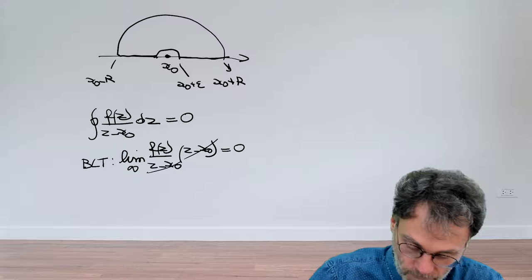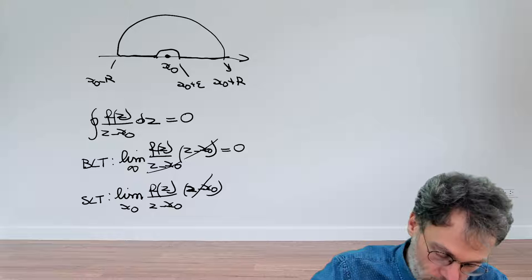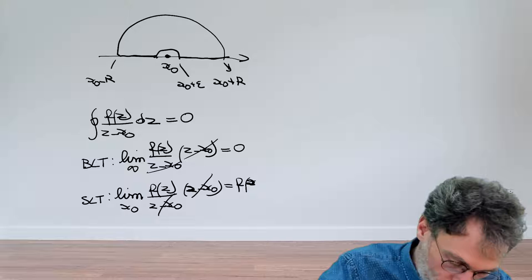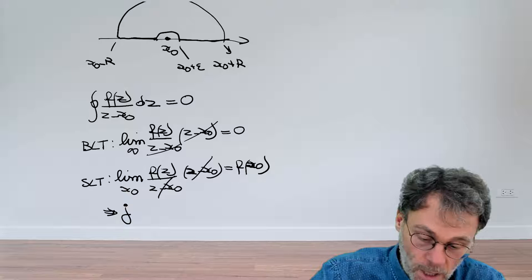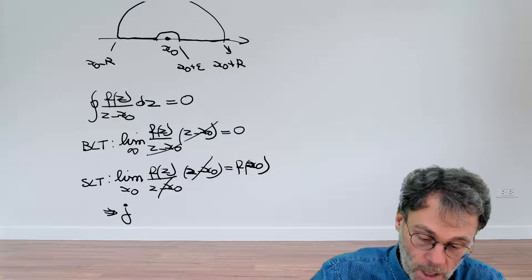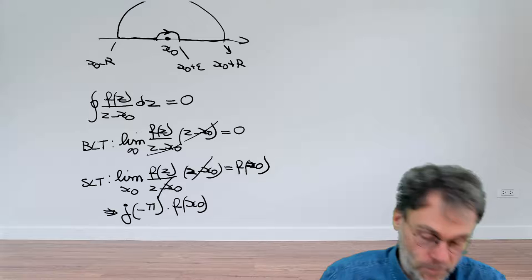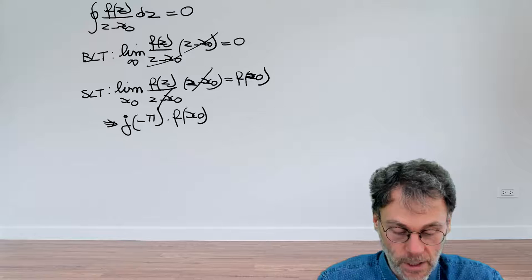For the small circle we use the small limit theorem. We look at the limit at x₀ of f of z times z minus x₀ divided by z minus x₀ — that cancels — giving f of x₀. The contribution from the small semicircle equals j times the angle subtended. Since we traverse it clockwise, the angle is minus pi, so the contribution is minus j pi times f of x₀.